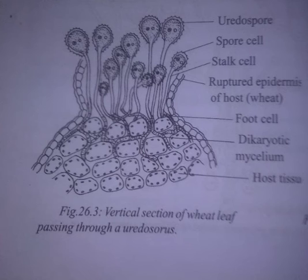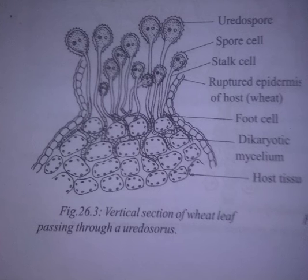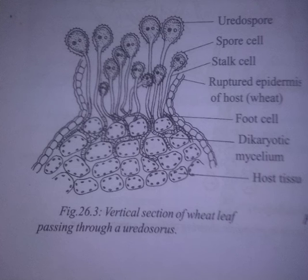Due to the pressure of developing uredospore cells, they are liberated. The uredospores germinate on the wheat plant. Each uredospore produces one or more germ tubes through the germ pore. Germ tubes grow to the surface of the leaf and reach the stomata.